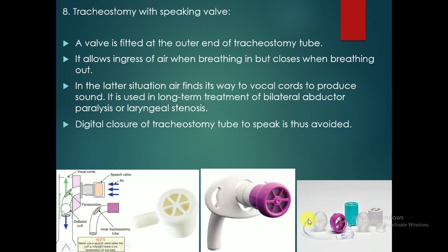Tracheostomy with speaking valve: a valve is fitted at the outer end of the tracheostomy tube. It will allow the ingress of air when breathing in but closes when breathing out. While breathing out, the air finds its way to the vocal cords to produce sound. It is used in long-term treatment of bilateral abductor paralysis or laryngeal stenosis. Digital closure of the tracheostomy tube to speak is thus avoided.